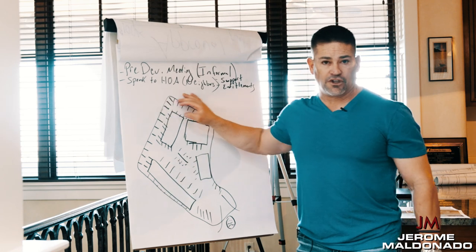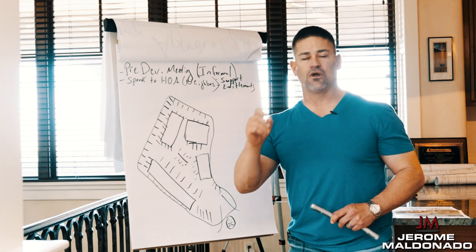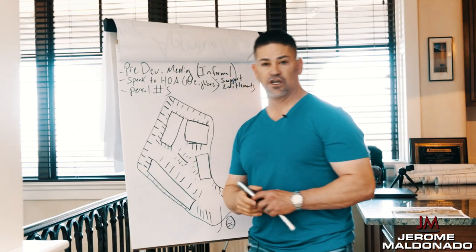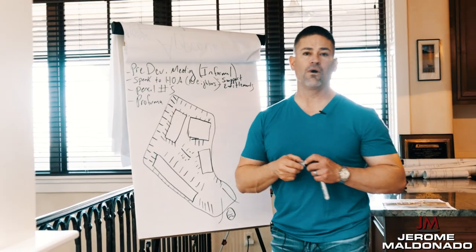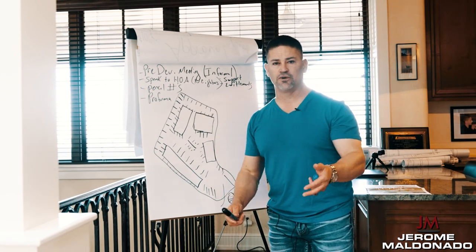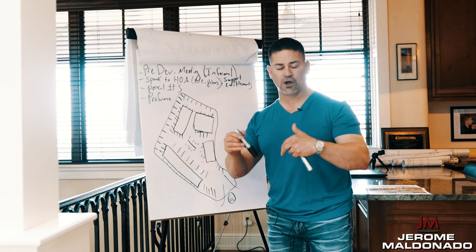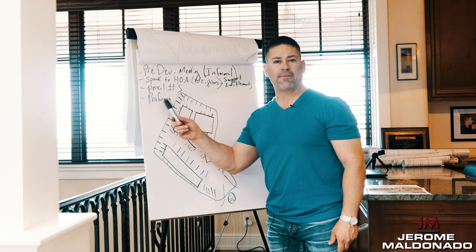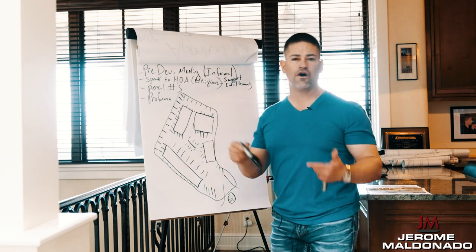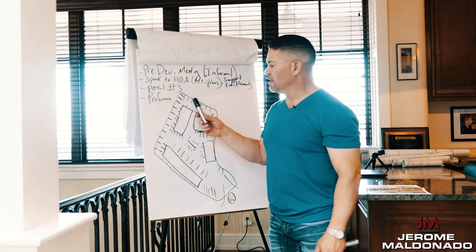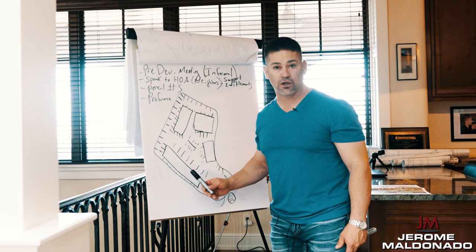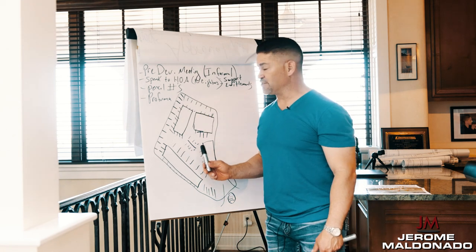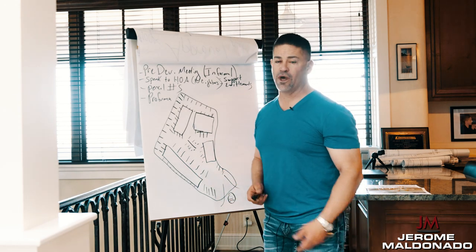Before we get too deep, we do what's called a soft pencil underwrite on the apartment complex. We pencil the numbers, but we can't do that without a few things. One of the first is a pro forma. A pro forma for existing multifamily is worthless here — we don't care about future projections. When developing, we need a pro forma that tells us exactly what other apartment complexes in that area are doing today, so we can realistically see what our financials will look like. There's a need for these products almost everywhere across the continental United States.